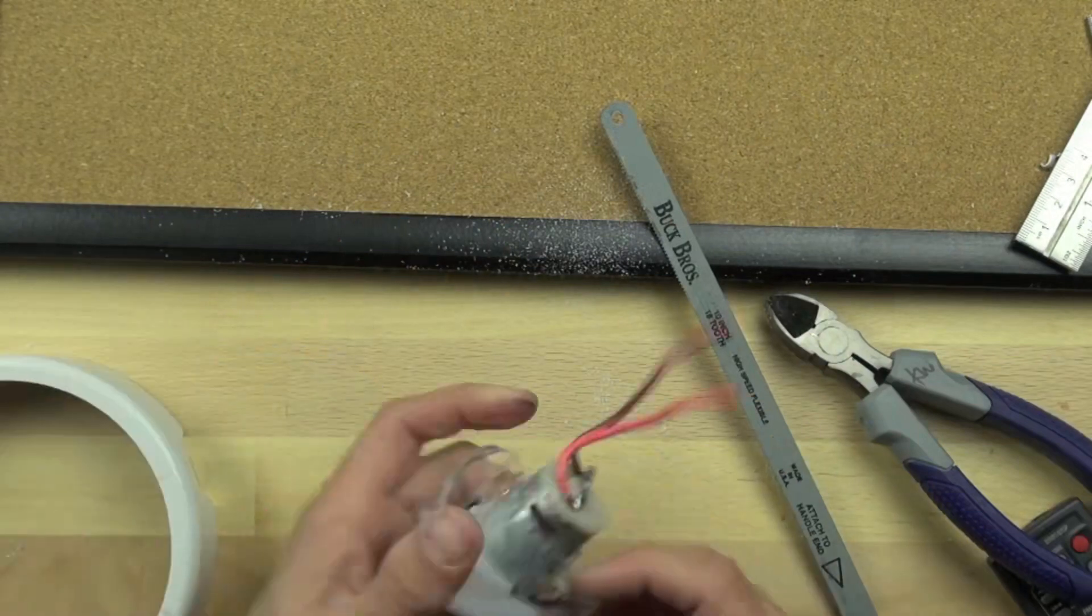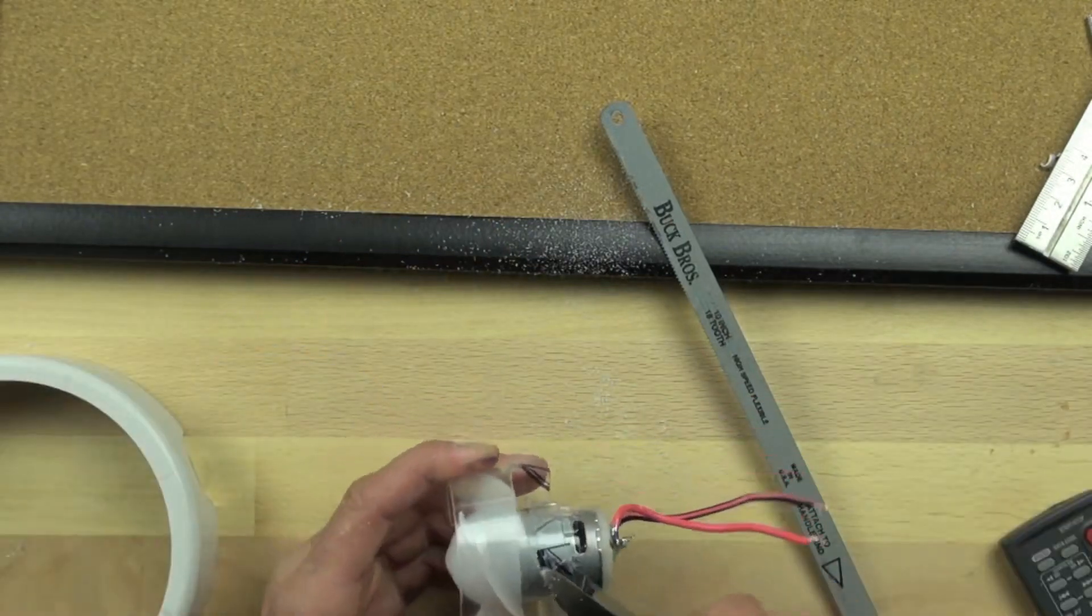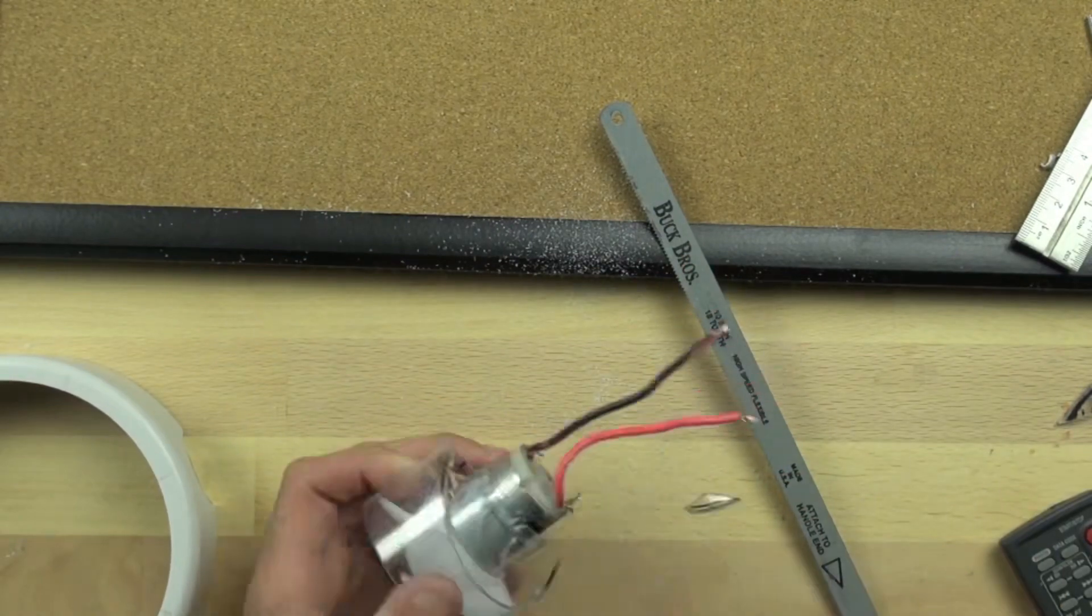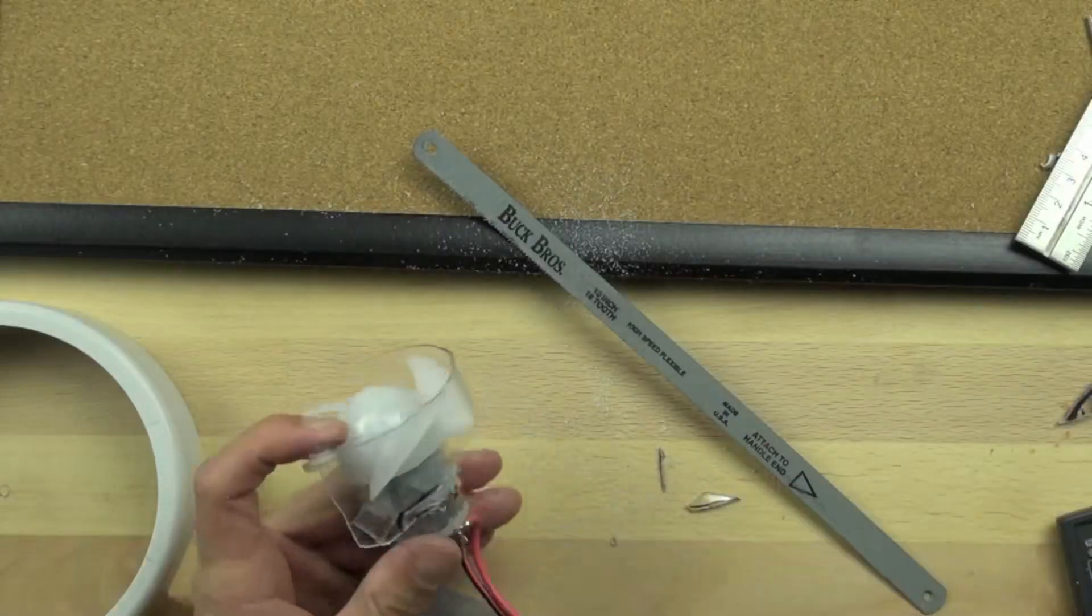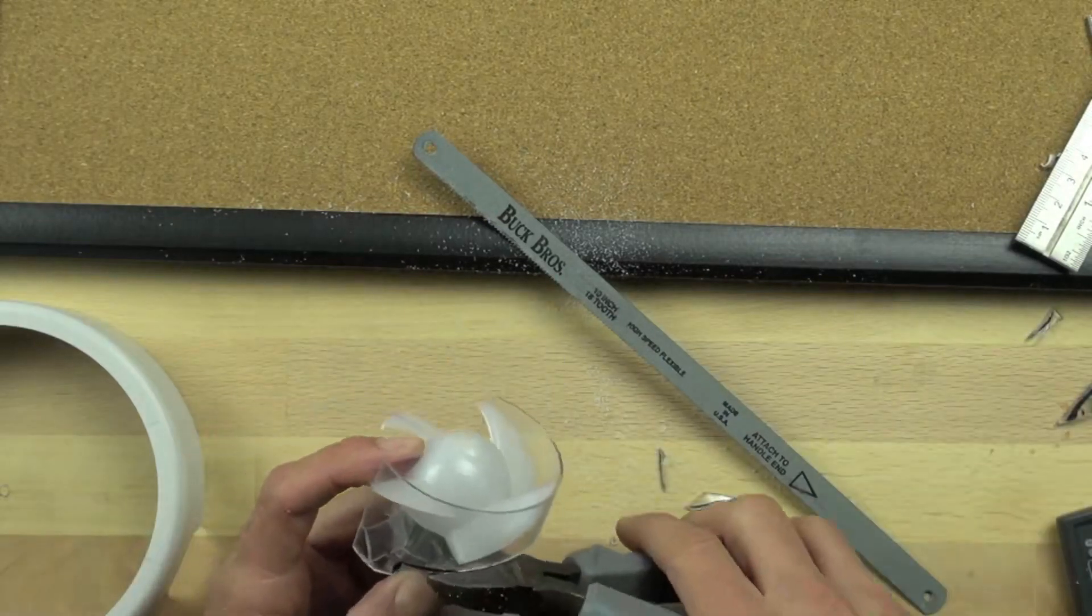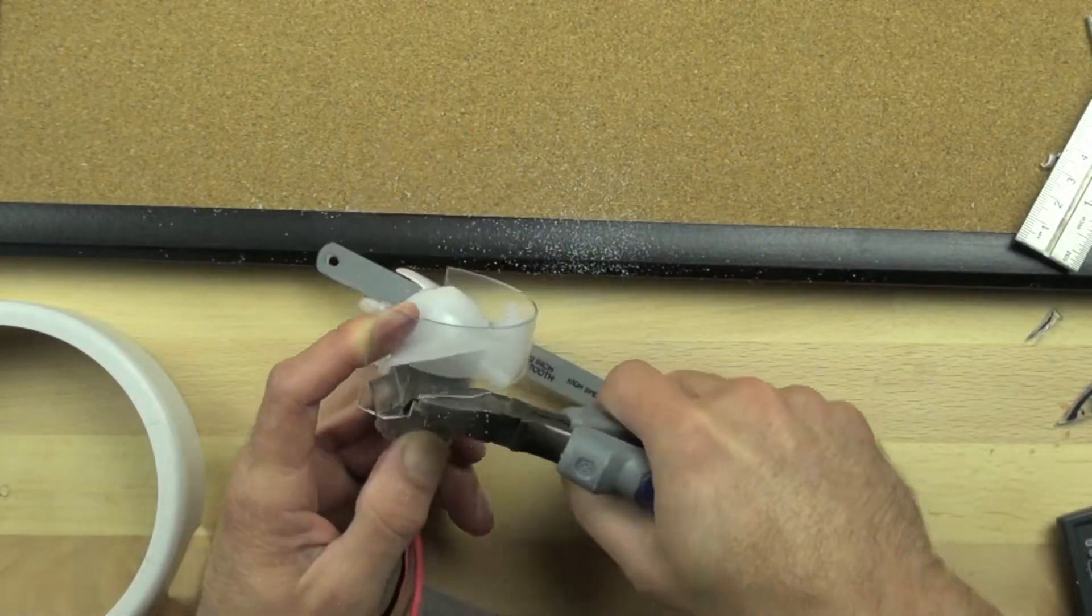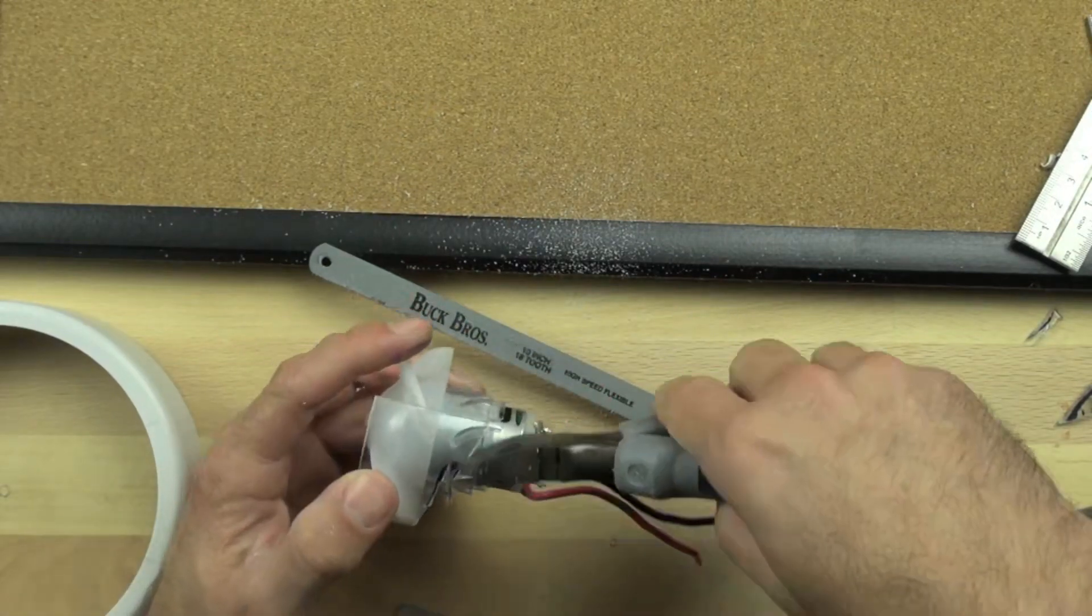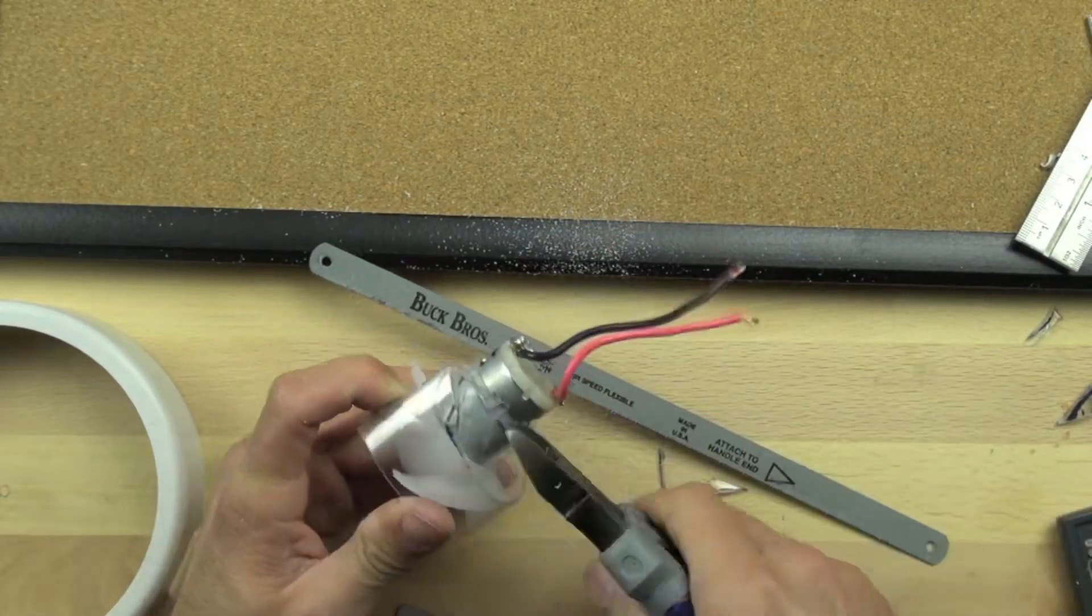In order to get it to fit just right we're going to need to trim it and we're going to use our nipper pliers to finish the trimming and make sure that we can get the kind of fit that we want. It takes a fair bit of patience, but I think it's better to take a little bit off at a time than to try and do it all at once and not get a nice clean fit.